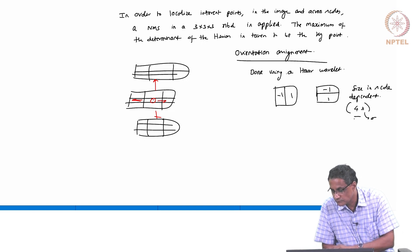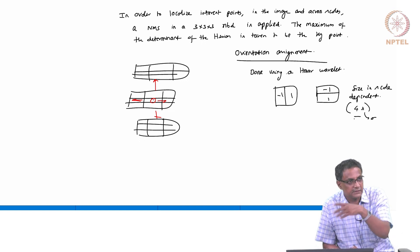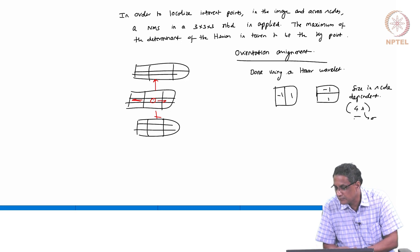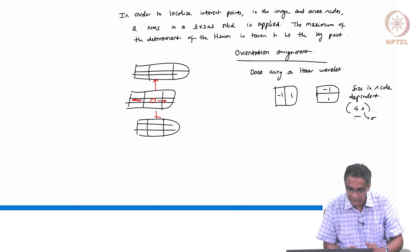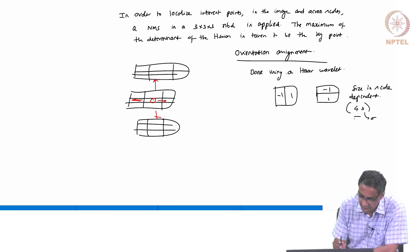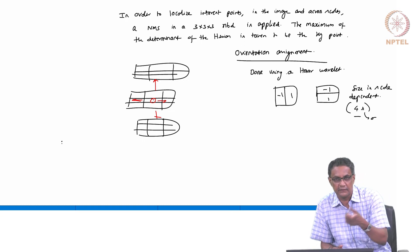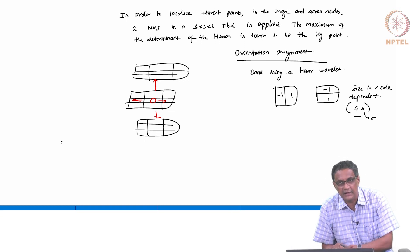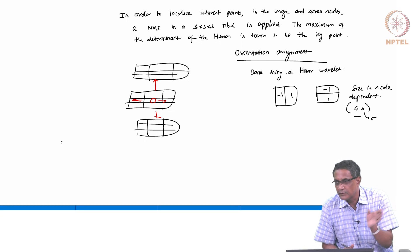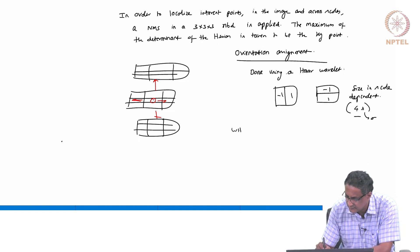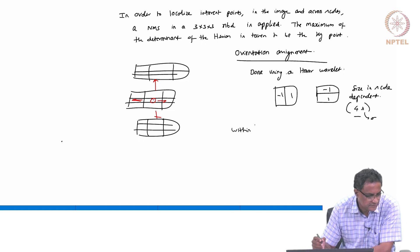Always remember the Haar wavelet is such that its area and weights sum to 0. It is a function of the scale. You are sitting at a point and you want to do some orientation assignment. Earlier, we were trying to find out the strength of the gradient and then know the orientation — we would bin them. Something similar is done here, with some minor changes. Within a circular neighborhood, let us not be too specific.